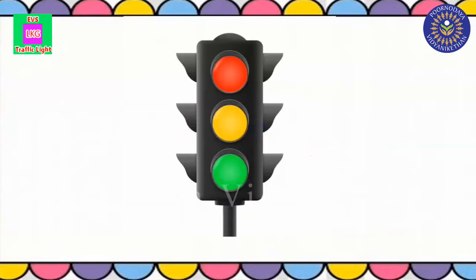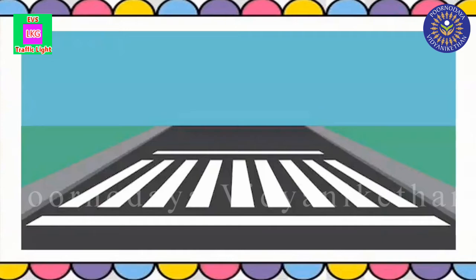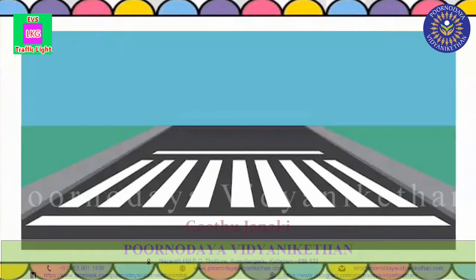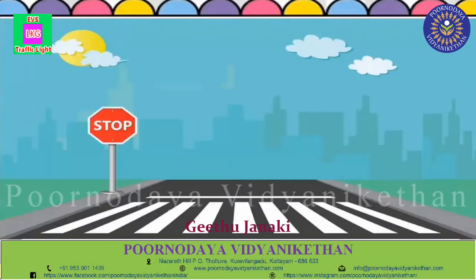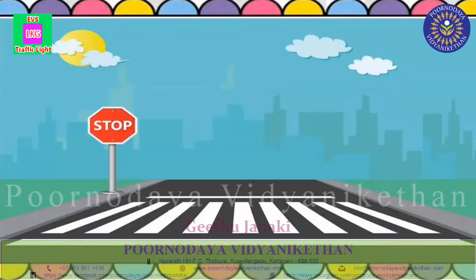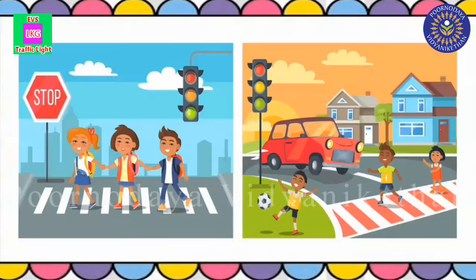We must follow these signals while we travel on the road. Children, when you walk through the road, how many of you have seen black and white stripes on the road? We call them zebra crossing. We should cross the road only at the zebra crossing to be safe.